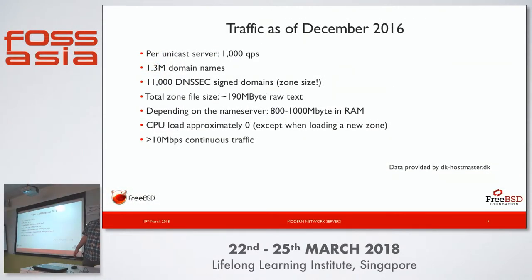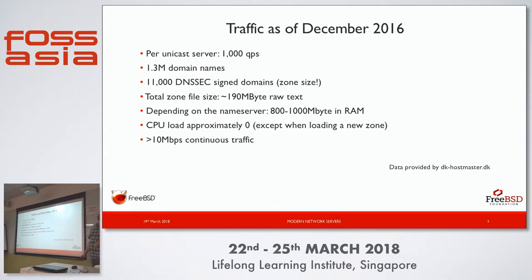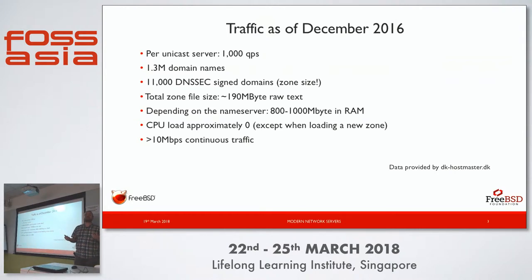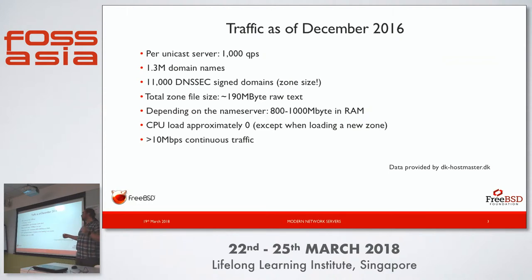A question was raised about the ratio of DNSSEC data in the zone. Off the top of my head, I'd say about 30% of those 190 megabytes is probably the hashes — you have two hashes and they're fairly large. But don't hold me to that. Regardless, depending on the name server it expands to about a gigabyte in RAM, so the DNS server puts it in a format that makes sense to it rather than the author of the zone file. About a gigabyte in RAM — not a very large number, but something to take into account.